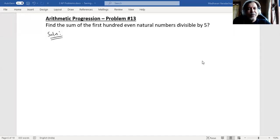Hello, everyone. This is a continuation to our various problems on arithmetic progression. This is problem number 13. The question says: find the sum of the first 100 even natural numbers divisible by 5.